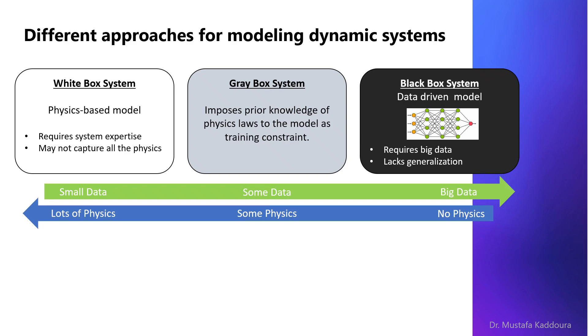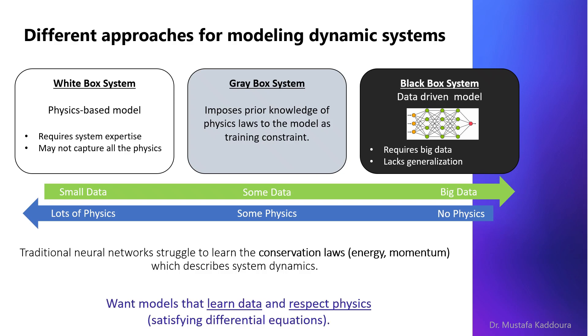In the gray box modeling approach traditional neural networks struggle to learn conservation equations such as conservation of energy and momentum which describes system dynamics. For that we want models that learn data and respect physics at the same time.